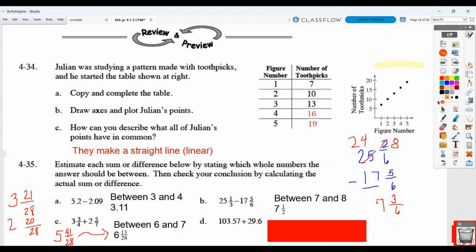Here in terms of an estimate again, you might say about 104 plus about 30. So the answer would probably be between 133 and 134. And then again, line up your decimal points, show your work, and you should get 133 and 17 hundredths.